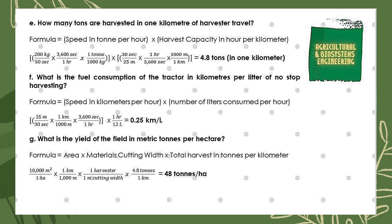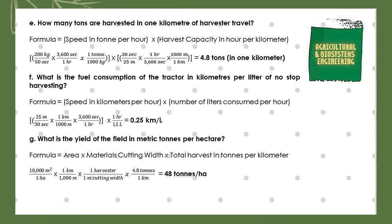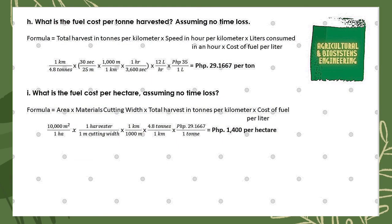Next, we solve for the yield of the field in metric tons per hectare. Using the formula: area × width × total harvest in tons per kilometer. We have 10,000 m² (one hectare) × (1 km / 1000 m) × 1 m cutting width × 4.8 tons per kilometer, giving a final answer of 48 tons per hectare.